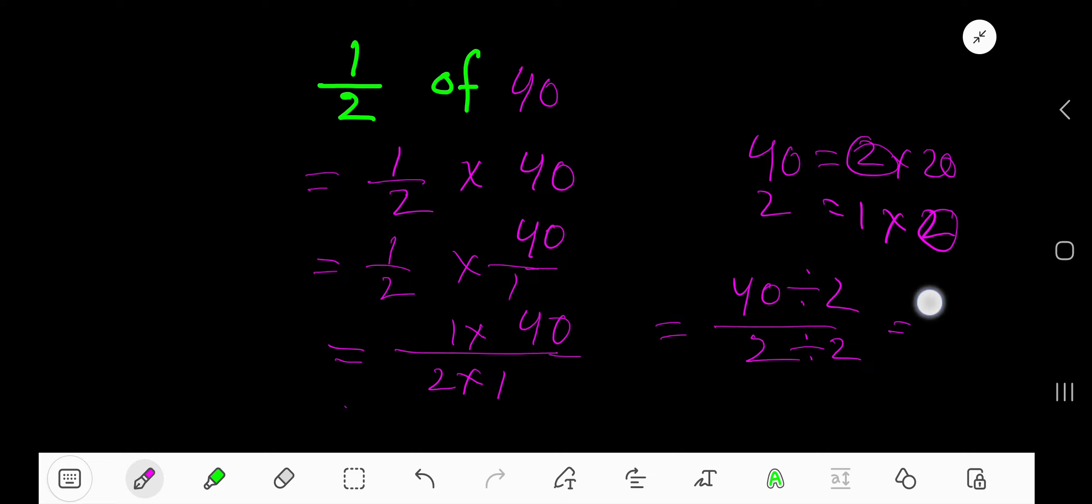So 40 divided by 2 is 20 and 2 divided by 2 is 1. That is, 20 is your answer.